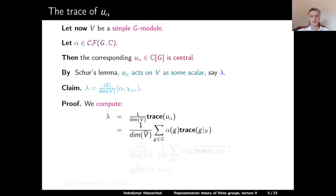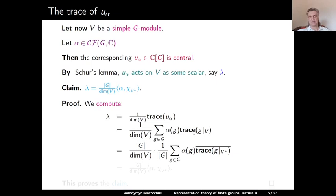Multiplying and dividing by the cardinality of G, and recalling that the complex conjugate of the trace of g on V equals the trace of g on V-dual, we can rewrite this as the cardinality of G divided by the dimension of V, times (1/|G|) times the sum over g of alpha(g) times the complex conjugate of the trace of g on V-dual. This is exactly the cardinality of G over the dimension of V, times the inner product of alpha with the character of V-dual.